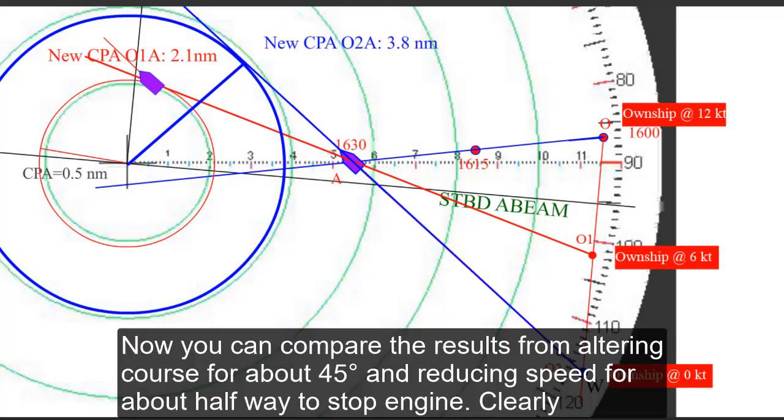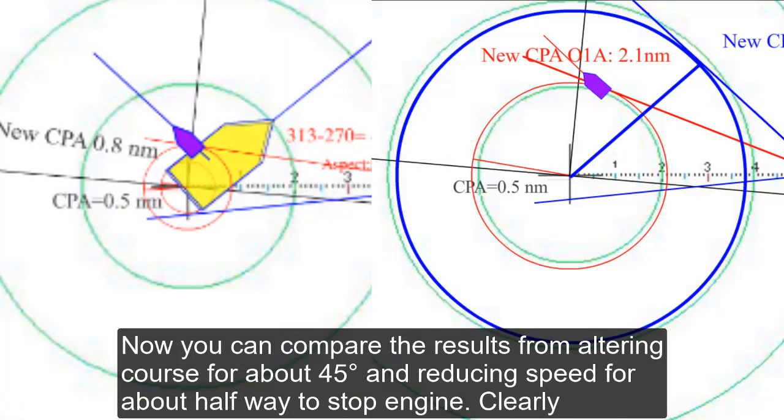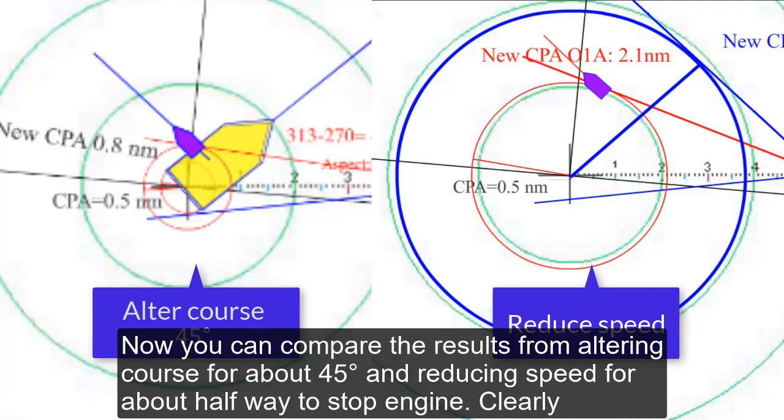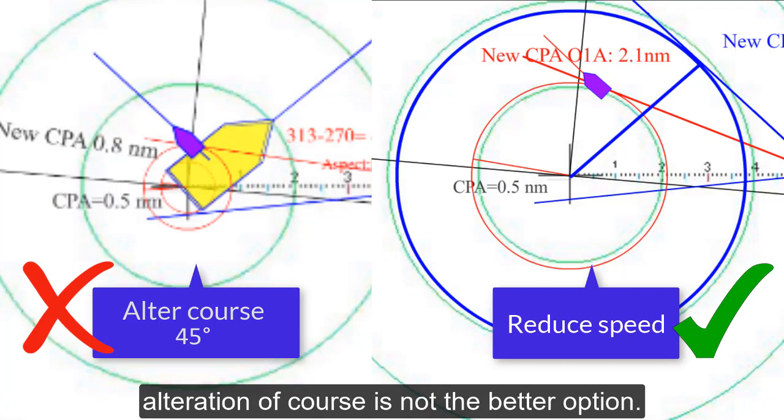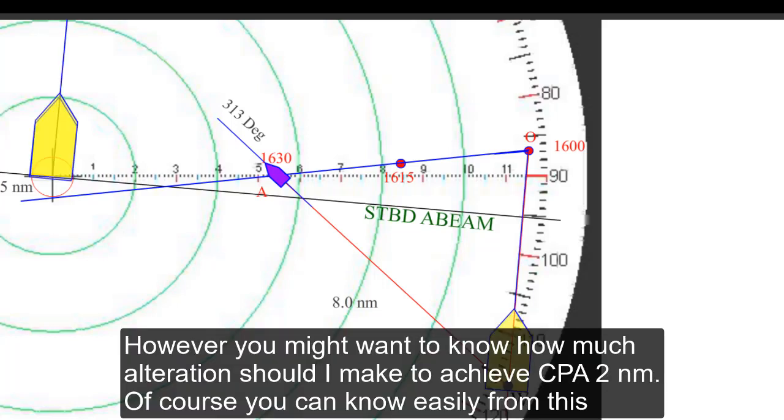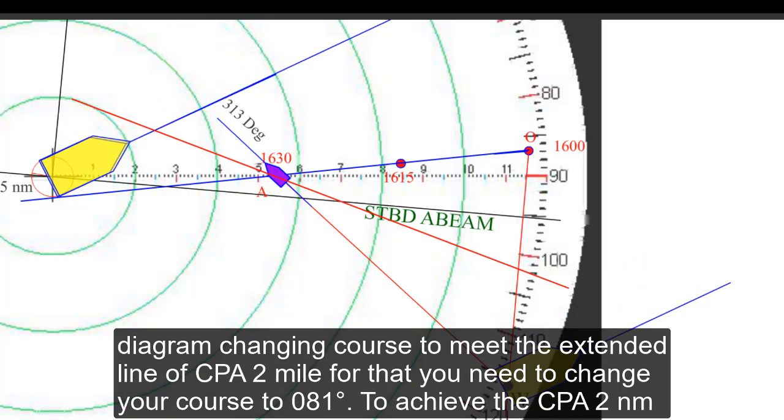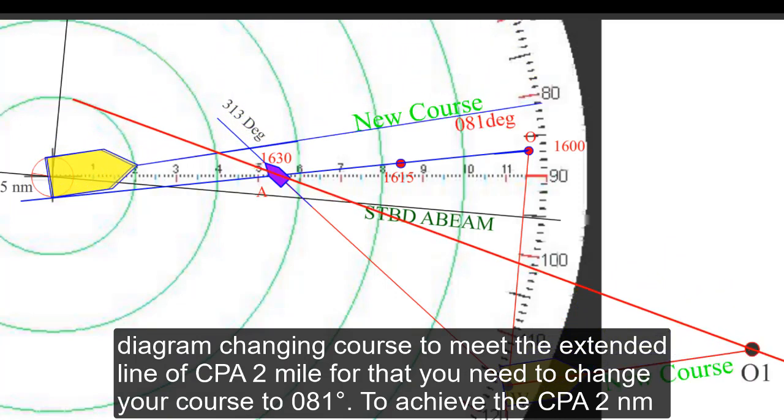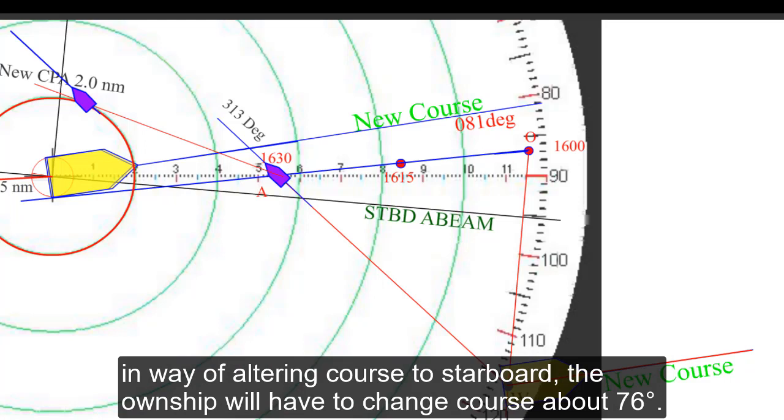Therefore if you take the speed reduction procedure for collision avoidance purpose your CPA will be between 2.1 and 3.8 nautical miles. Now you can compare the results from altering course for about 45 degrees and reducing speed for about halfway to stop engine. Clearly alterations of course is not the better option. However you might want to know how much alteration should I make to achieve CPA 2 nautical miles. Of course you can now easily know from this diagram changing course to meet the extended line of CPA 2 nautical miles. For that you need to change your course to 081 degrees to achieve the CPA 2 nautical miles in way of altering course to starboard the own ship will have to change course about 76 degrees.